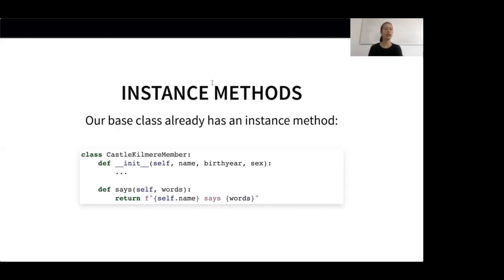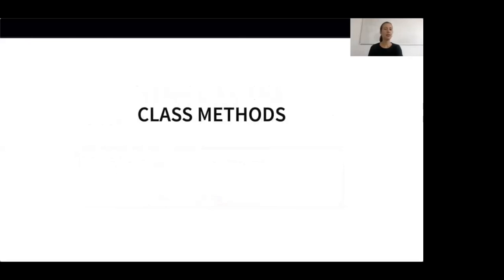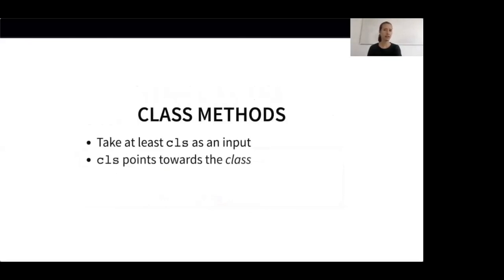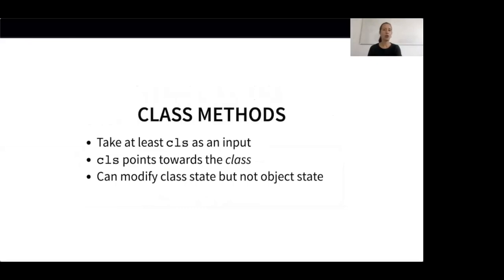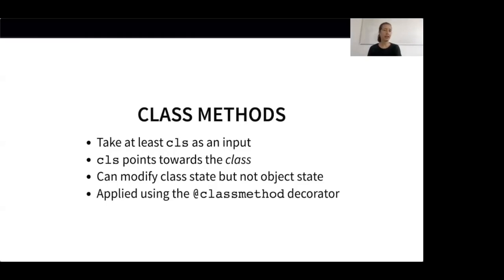The next type of method we will look at are class methods. Class methods look similar to instance methods in that they take at least one parameter as an input. This parameter is, however, not self but cls. cls points towards the class, not a particular object instance, when the method is called. Therefore, a class method can only modify class state but not object state — though changing the class state will affect all instances of the class. An important thing to know about class methods is that we need to use the @classmethod decorator when implementing a class method. We will talk about decorators later, so right now you only need to remember to put @classmethod on top of the function.